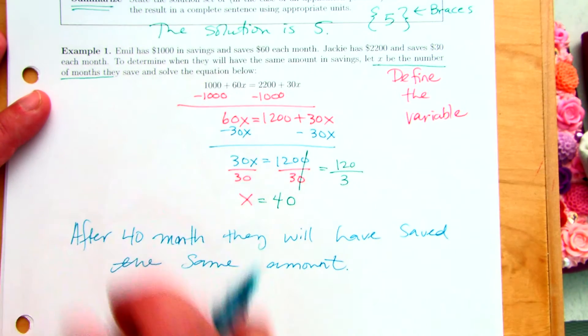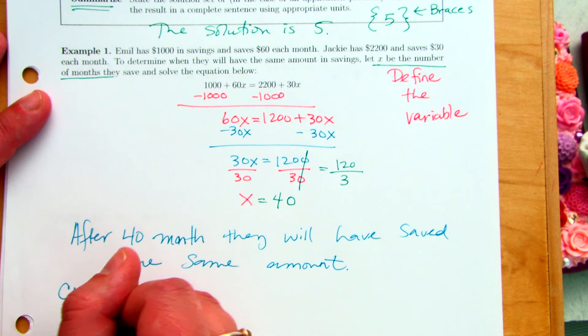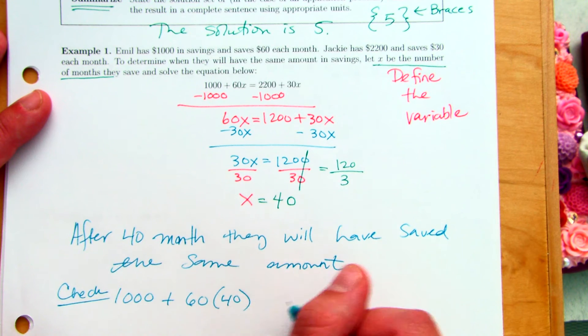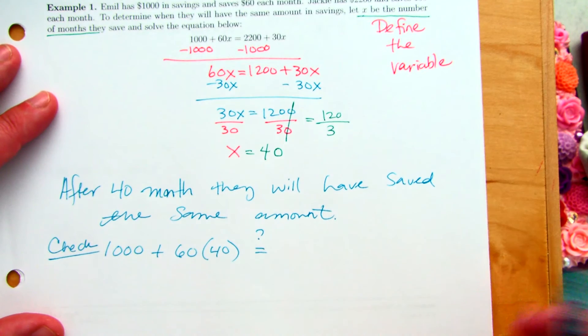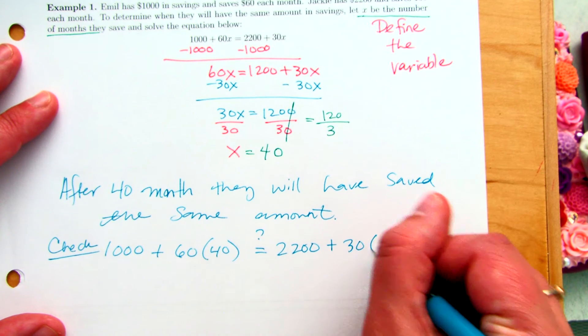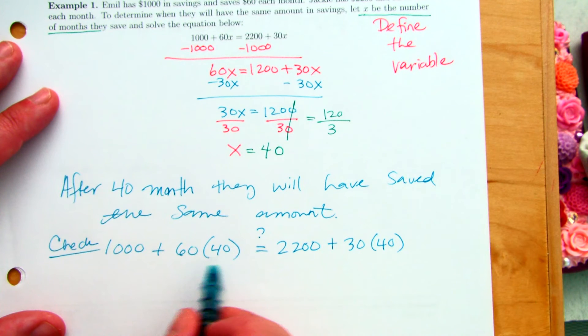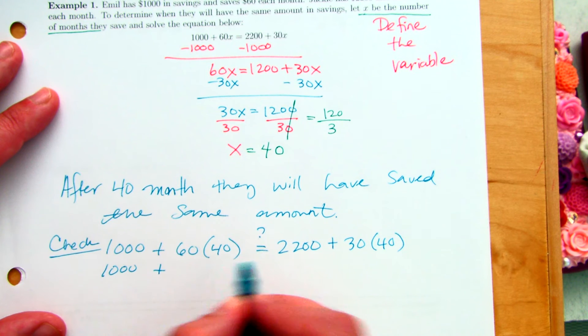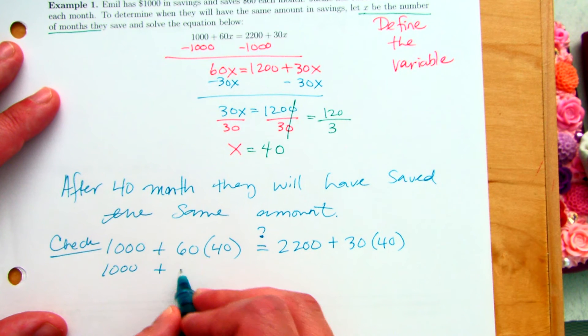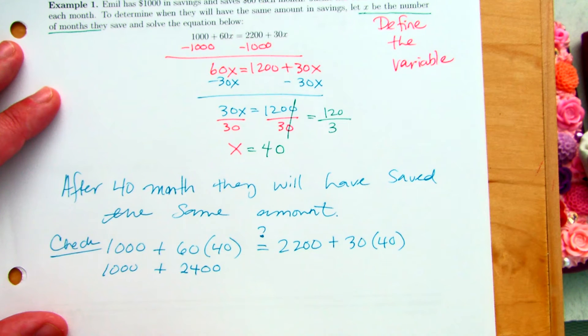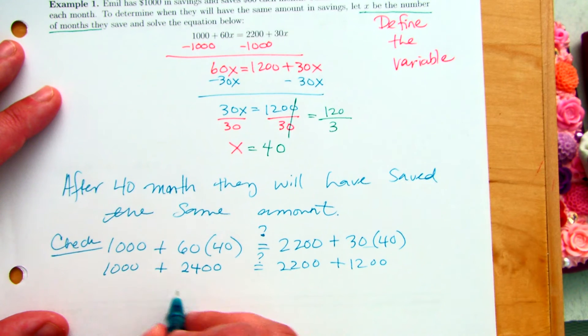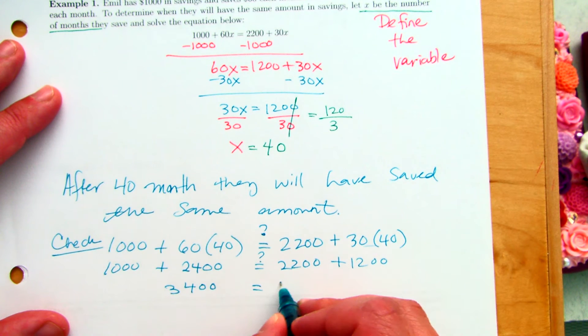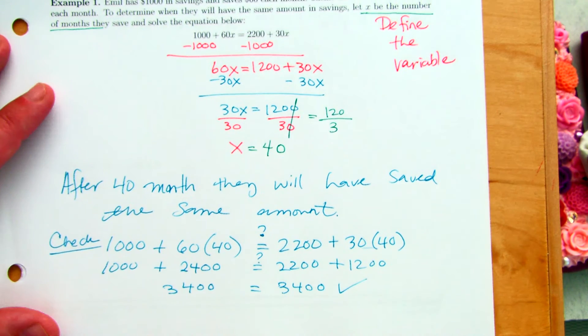It would be interesting to know what that amount is. Actually, if we take the 40 and we plug it in, 1,000, this is our check, 1,000 plus 60 times 40. This is going to show us if they've saved the same amount and what that amount actually is. So, 2,200 plus 30 times 40. These are very friendly numbers to multiply. We put a question mark here because we're not sure yet if we got the right answer. 6 times 4 is 24. There's two zeros for you. Equals, well, maybe it does, 2,200 plus 1,200. 3,400 is equal to 3,400.